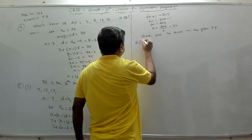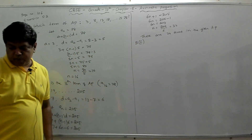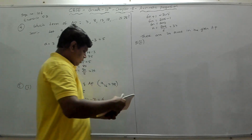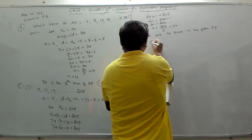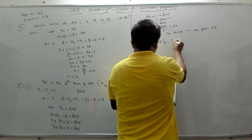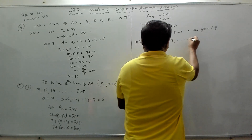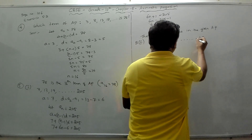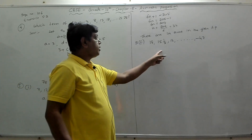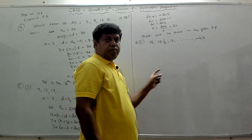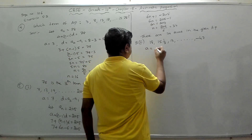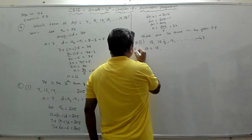The second part gives the AP: 18, 15½, 13, ..., −47. We have to find how many terms are there in this AP. The first term a = 18. The common difference d = a2 − a1 = 15½ − 18.